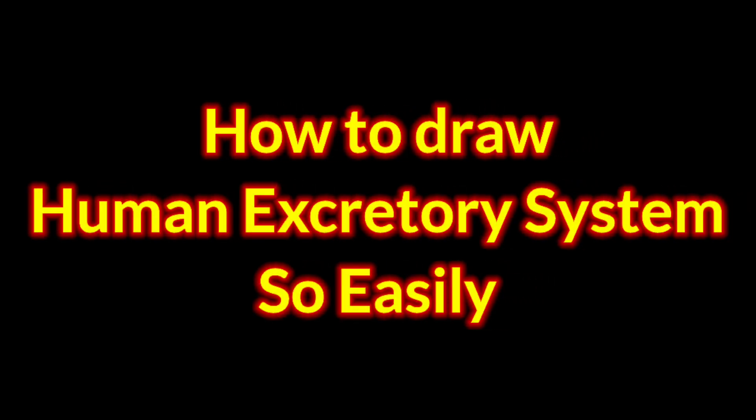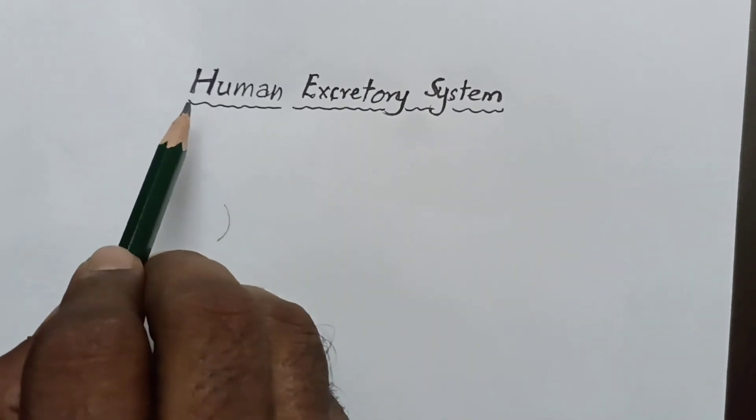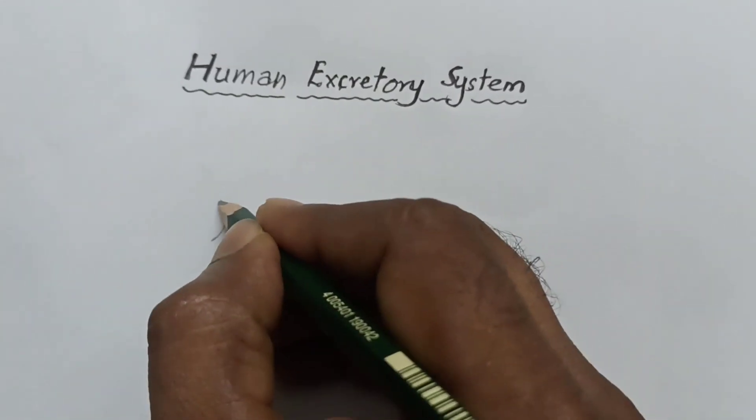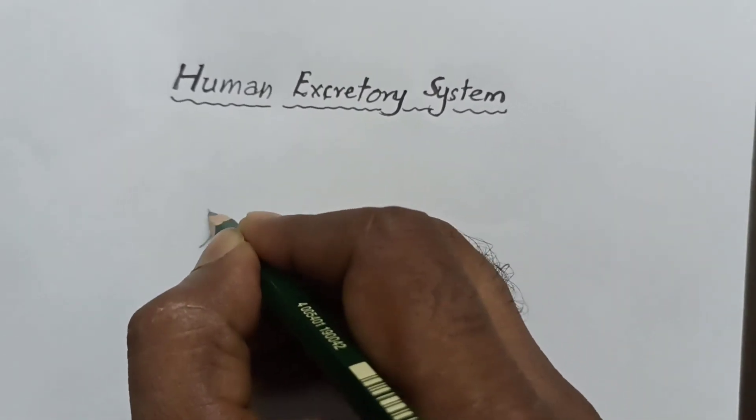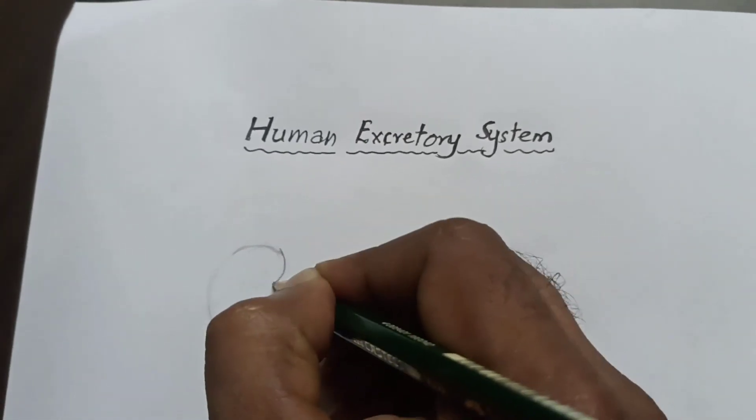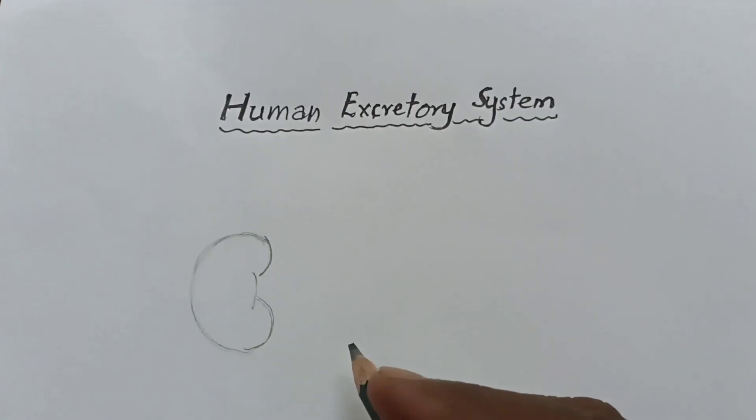Good morning. Today's topic is how to draw the human excretory system very easily. So let us start with the right kidney. Generally kidneys are bean-shaped, but we have to draw like this.